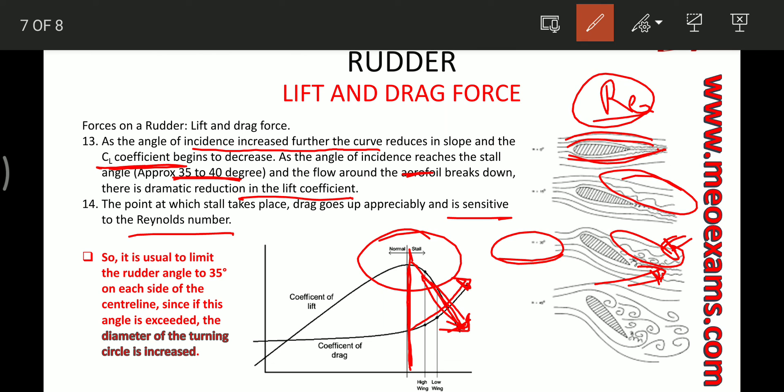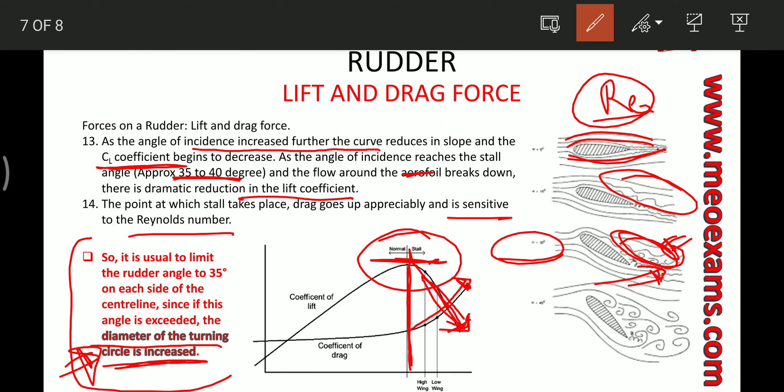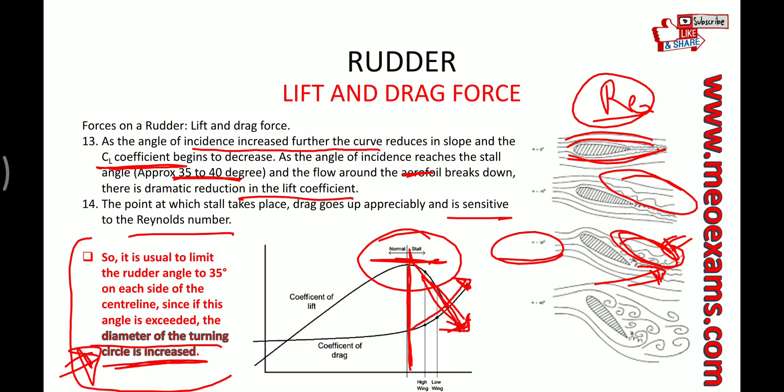The final result is: if we increase the rudder angle beyond 35 to 40 degrees, the lift force decreases, and since it is the lift force that provides the turning moment for the ship, the turning circle diameter will actually increase. This is the main reason that the rudder angle is limited to 35 degrees — because the lift coefficient decreases drastically after 35 degrees due to turbulent flow on the rudder profile, making a larger rudder angle counterproductive. Hope you have understood, friends. Take care and have fun.